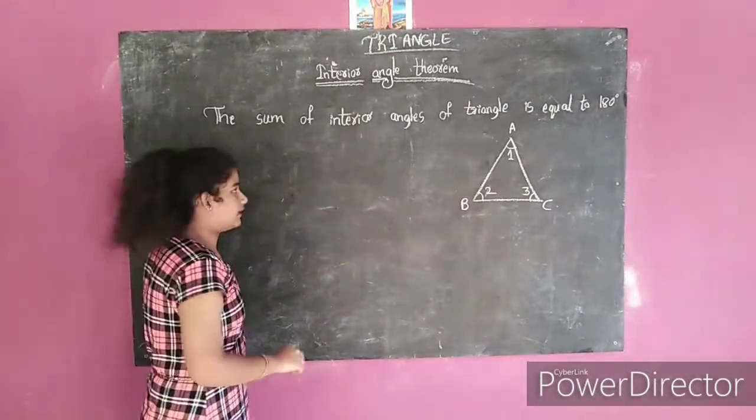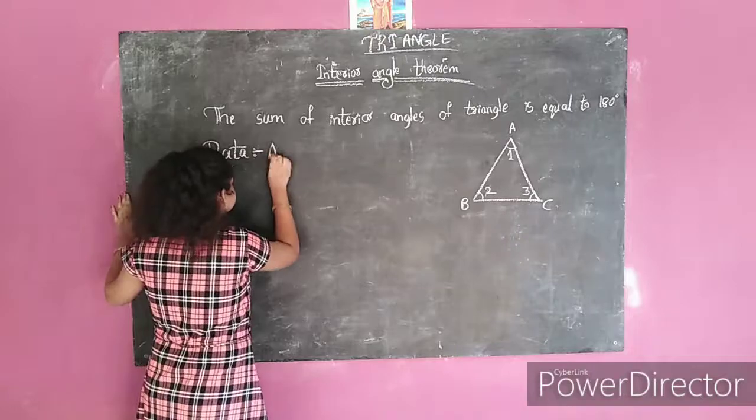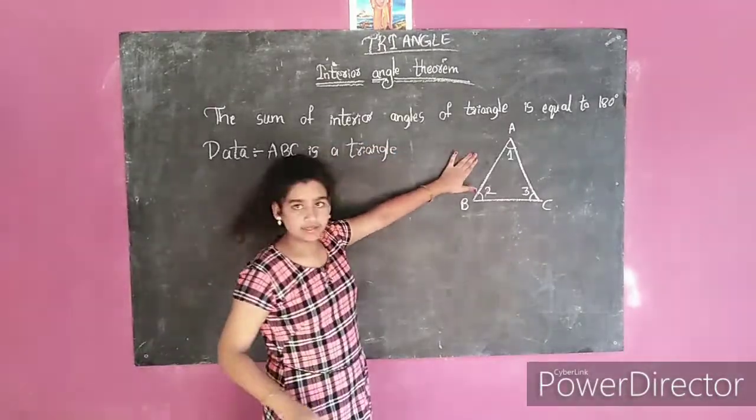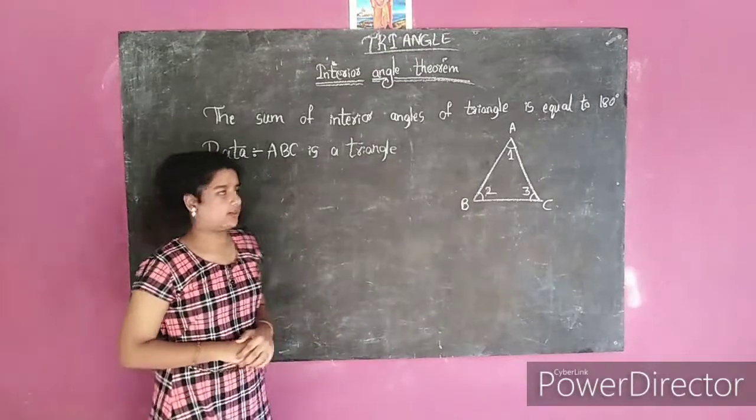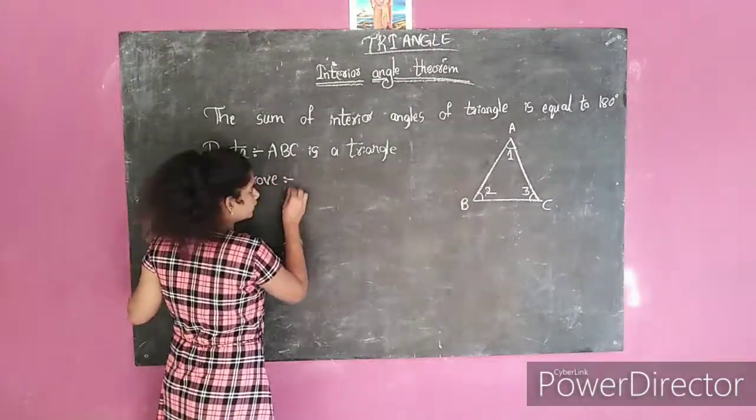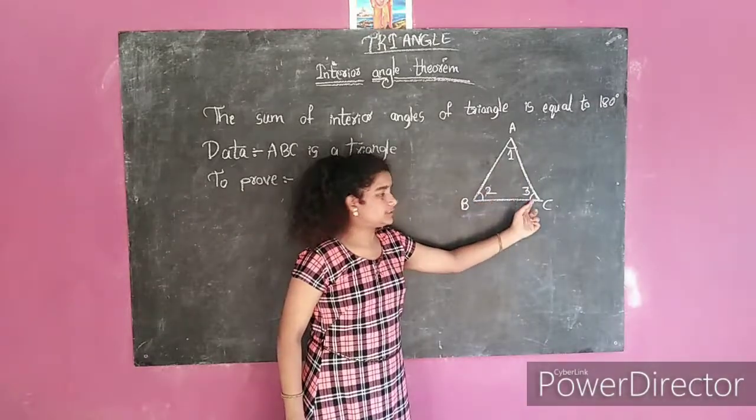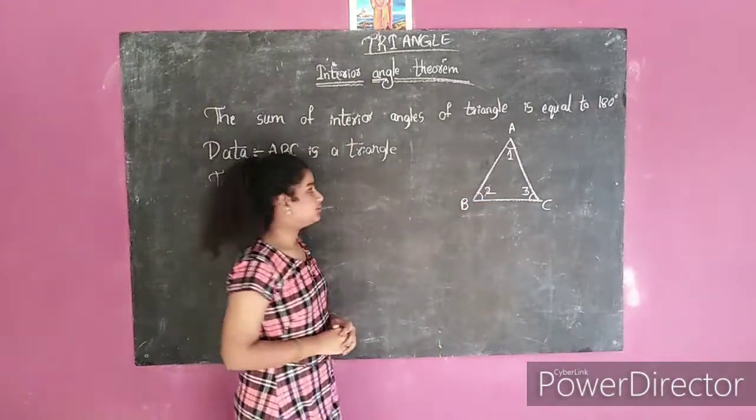Now we should write the data. ABC is a triangle - it is our data. To prove: angle 1 plus angle 2 plus angle 3 is equal to 180 degrees.